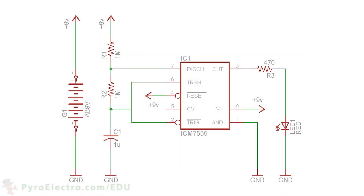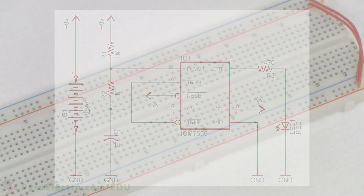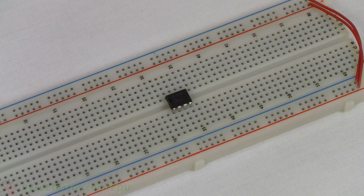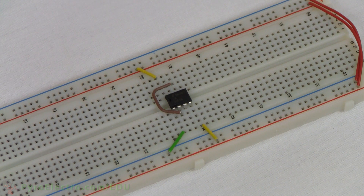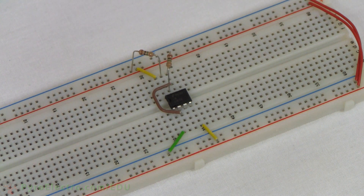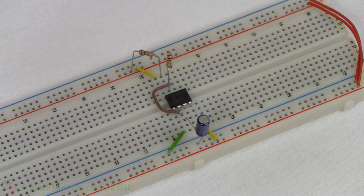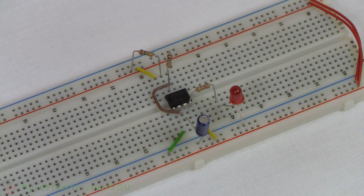Here is a schematic of the circuit we are going to build. Refer back to it if the video moves too quickly. First, we'll place the 555 timer in the middle of the breadboard. Next, we'll connect pin 2 and pin 6 together. Now, we'll connect pin 1 to ground. With some yellow wires, we'll connect pin 4 and pin 8 to plus 9V power. Next, we'll connect a 1-megaohm resistor from plus 9V power to pin 7 of the 555 timer. The other 1-megaohm resistor connects from pin 7 to pin 6. The 1-microfarad capacitor connects to pin 2 of the 555 timer and the other side to ground. Lastly, a 470-ohm resistor and LED are connected to the 555 timer's output at pin 3.